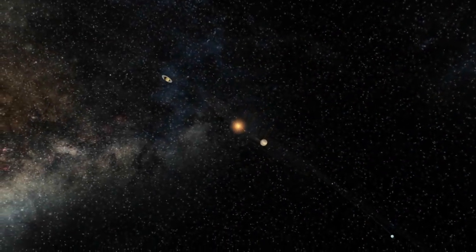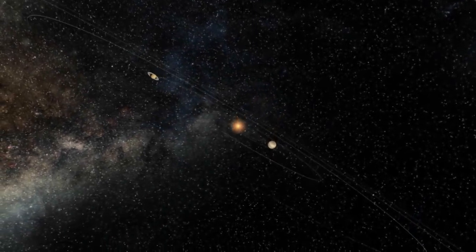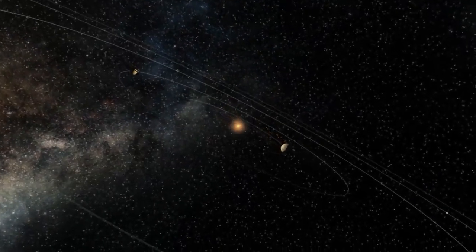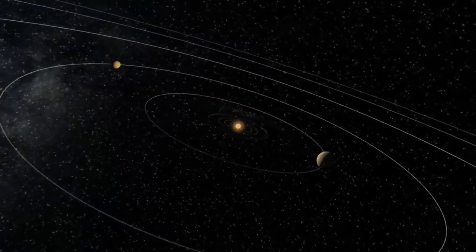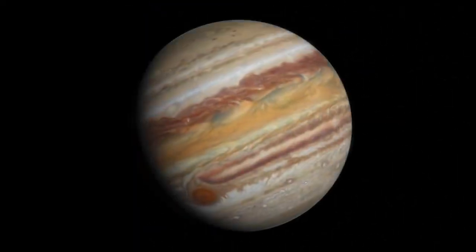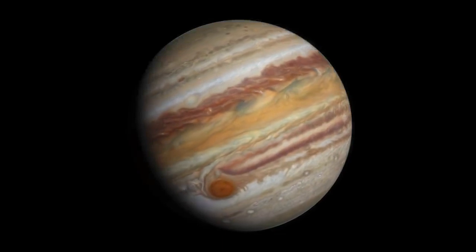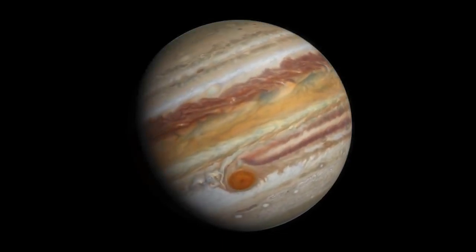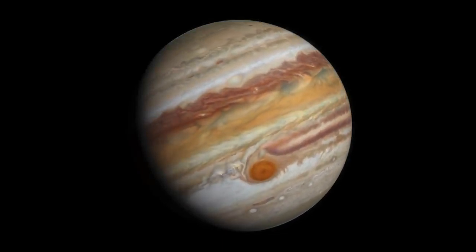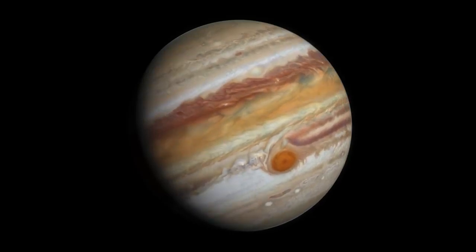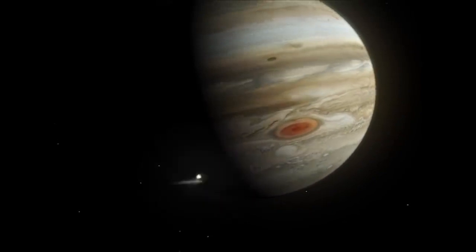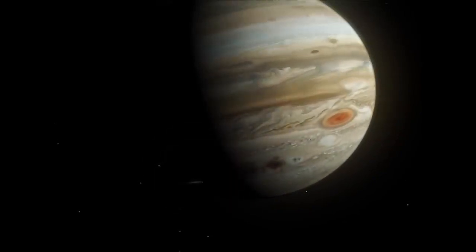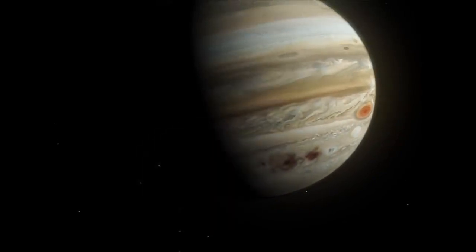Hubble has revolutionized planetary science in a number of ways through its precise observations of our own solar system. Hubble has charted the dynamic activity on Jupiter and its moon Io. In 1994, it also witnessed a comet crash into the planet's surface.